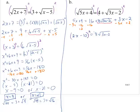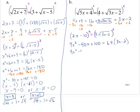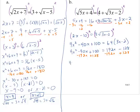Since there's still a radical, I'll square both sides again, yielding 4x squared minus 40x plus 100 equals 64 times 3x minus 2, so 4x squared minus 40x plus 100 equals 192x minus 128. Subtracting 192x and adding 128 to both sides gives 4x squared minus 232x plus 228 equals 0.